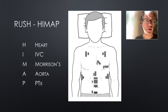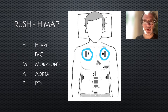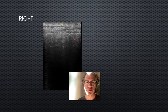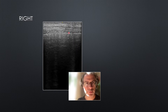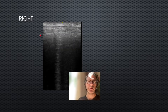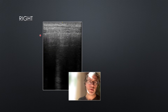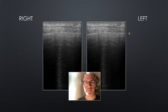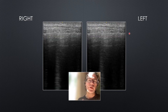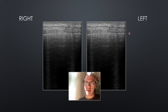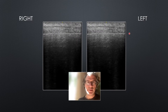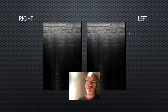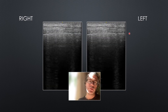The final part of the HIMAP exam is P for pneumothorax. We switch to the high frequency probe and move to the anterior chest, looking for lung sliding. Here is the right anterior chest with the pleural line visible — as the patient breathes in and out there is normal lung sliding, ruling out a pneumothorax at that point. The same on the left — normal lung sliding. If there was a tension pneumothorax causing shock, the whole lung on that side would be collapsed and you wouldn't see any lung sliding.